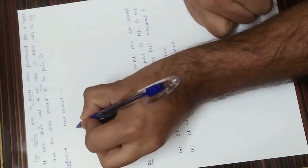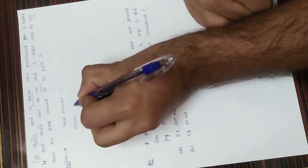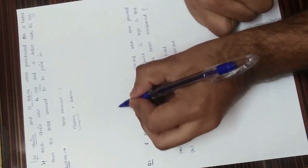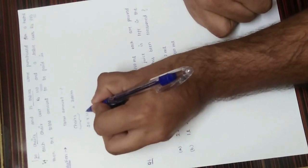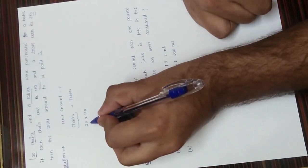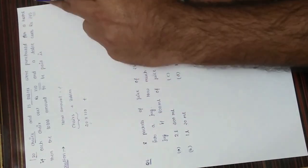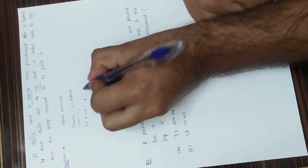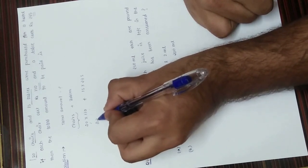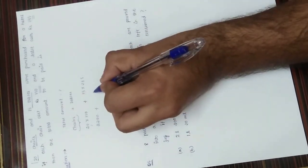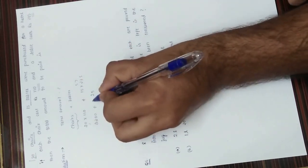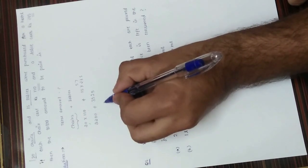To find the total cost, we calculate the cost of chairs and tables separately. 20 chairs at 110 each gives 20 × 110 = 2200. 15 tables at 235 each gives 15 × 235 = 3525.